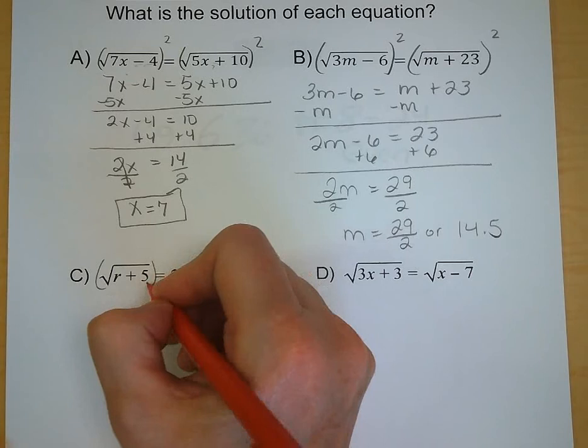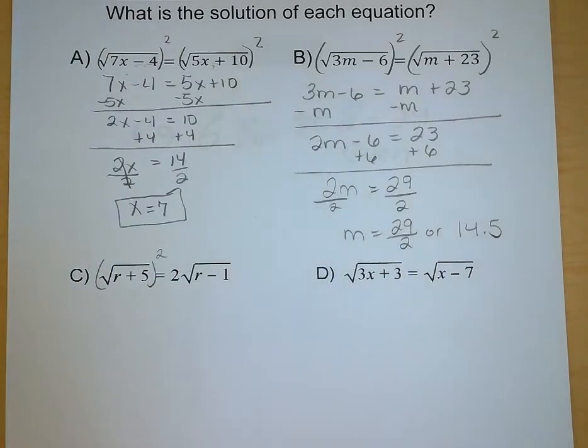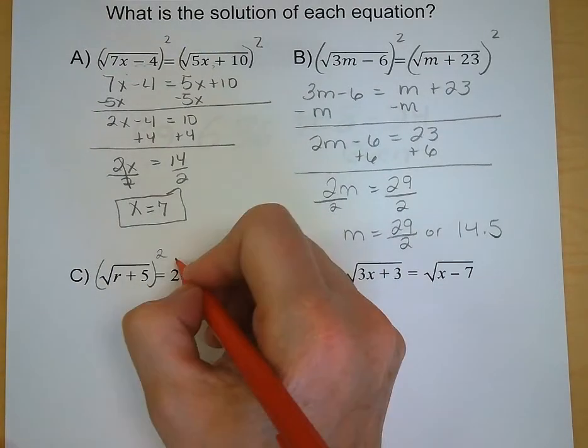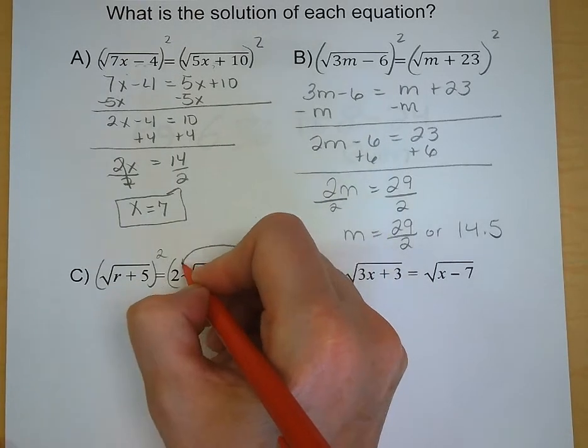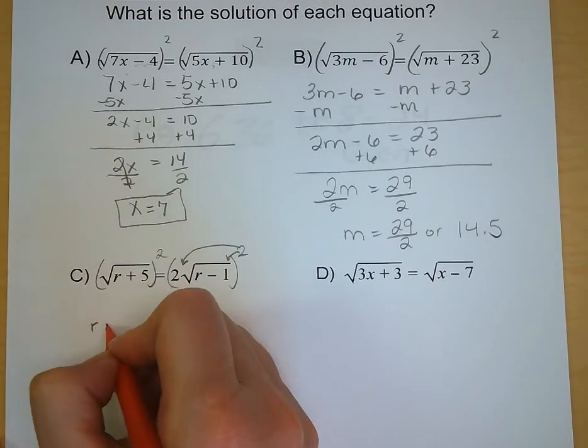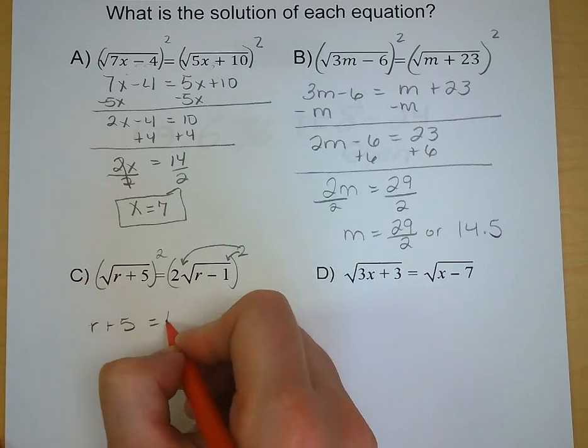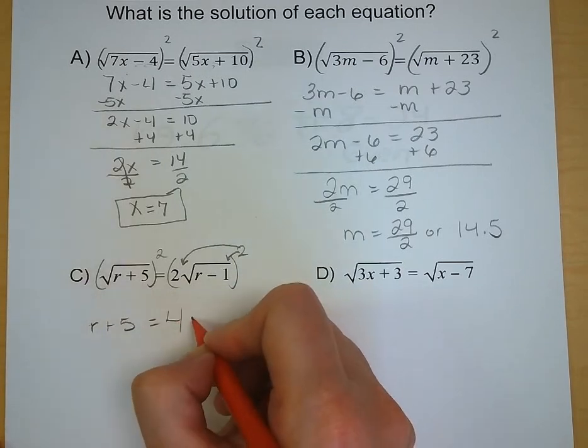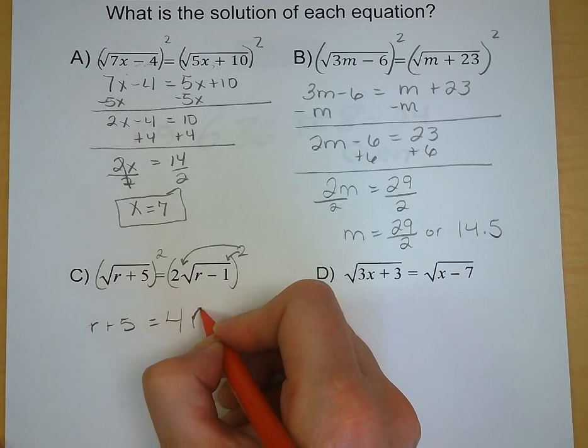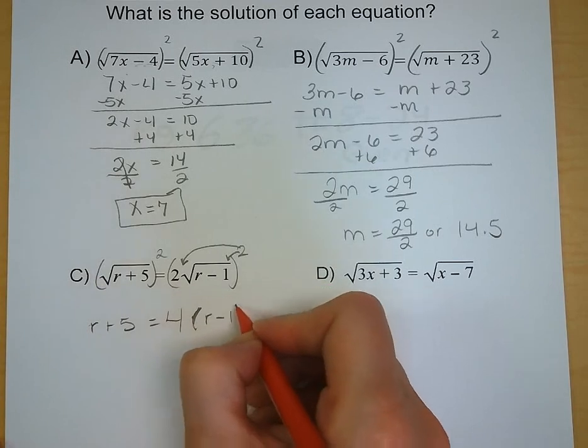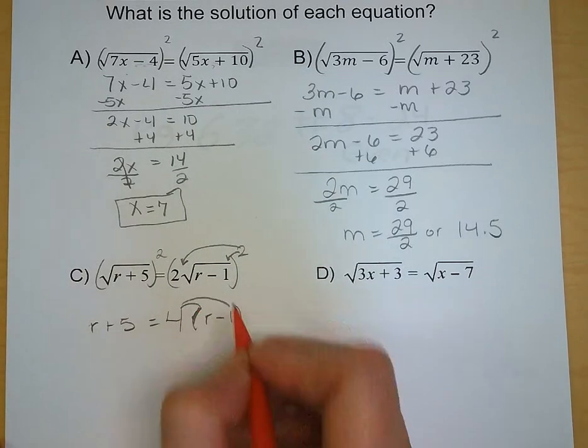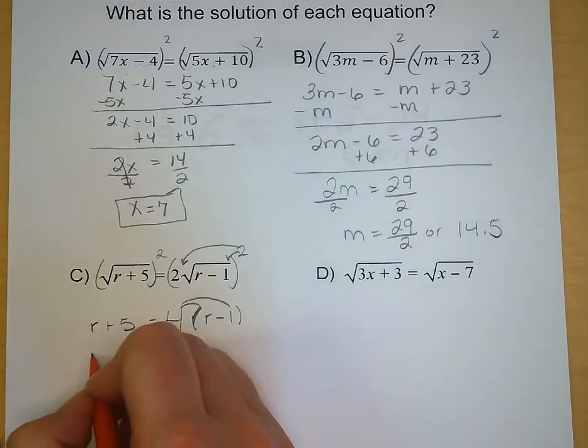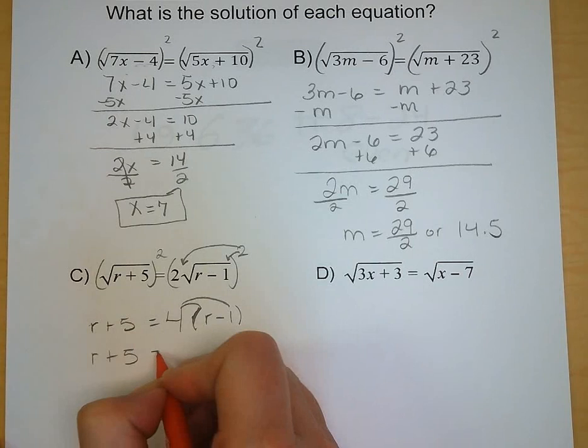Letter C. Square both sides of the equation. Now for this one, make sure you are squaring everything. So we got r plus 5 is equal to 4 times the quantity r minus 1. Now we need to use distributive property. r plus 5 is equal to 4r minus 4.